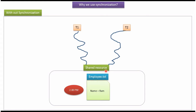Here you can see the shared resource employee.txt. It contains name equal to rom at 2 pm. Here you can see two threads, thread1 and thread2. These two threads are trying to access the shared resource employee.txt at the same point of time and trying to update the information. We will see what will happen.